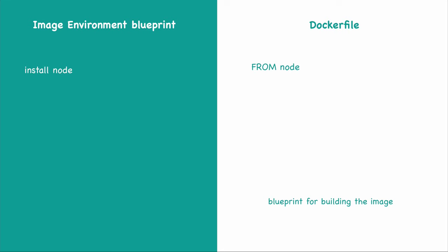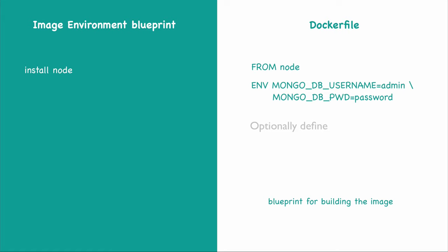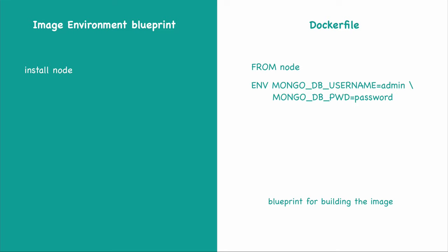The next instruction is ENV, which lets us configure environment variables inside our Dockerfile. We've already done this using Docker run commands or Docker Compose. This is just an alternative to defining environment variables in Docker Compose. It's generally better to define environment variables externally in a Docker Compose file because if something changes, you can override it by changing the Docker Compose file instead of rebuilding the image.